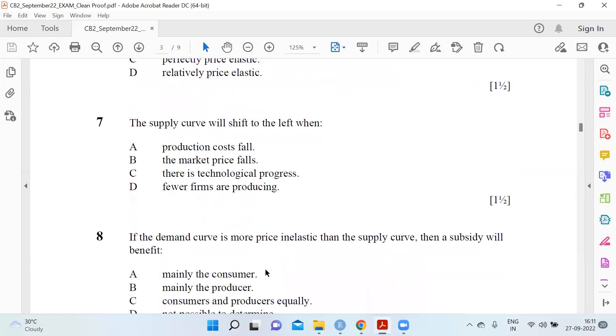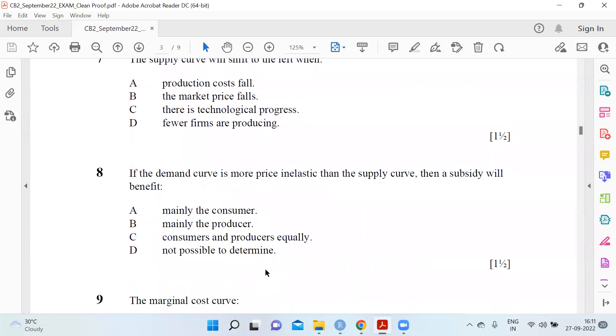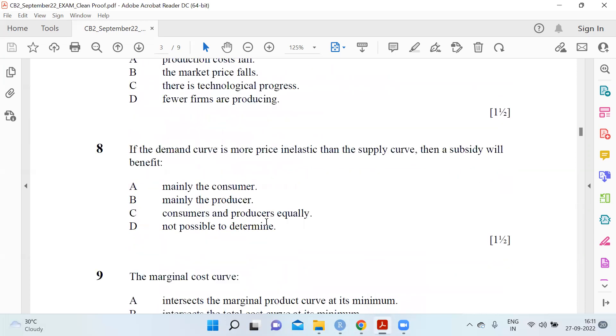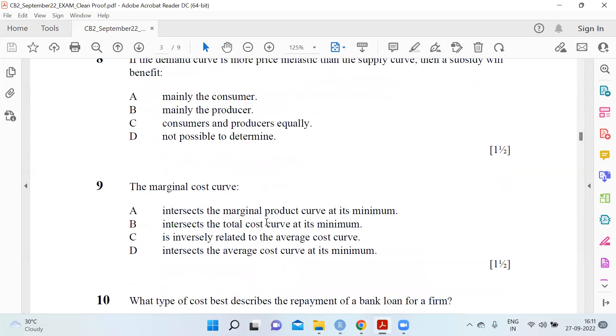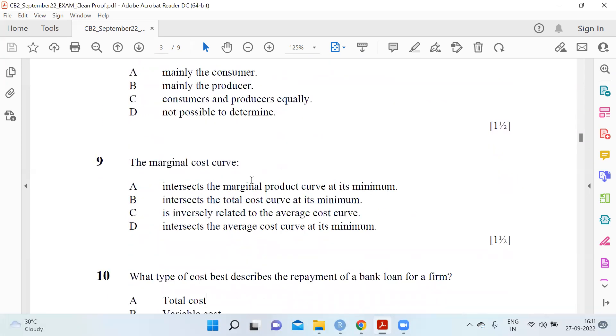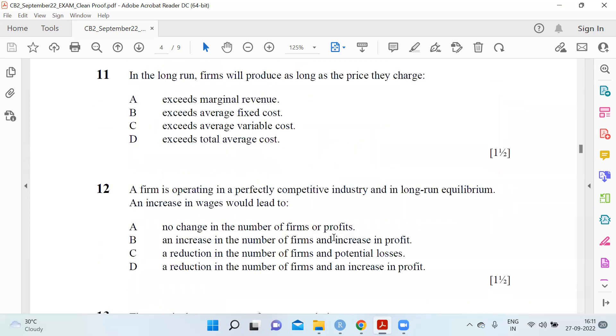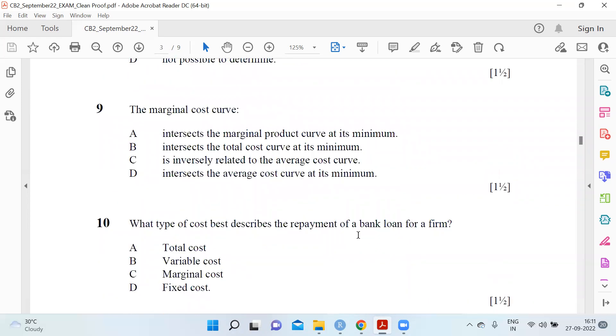If the demand curve is more price inelastic than the supply curve, then a subsidy will benefit the consumer. Question nine: The marginal cost curve intersects the average cost curve at its minimum. What type of cost is the repayment of a bank loan for a firm? It is fixed cost.